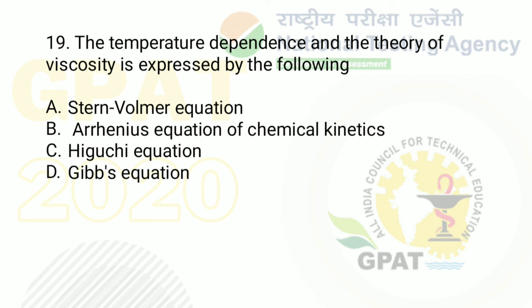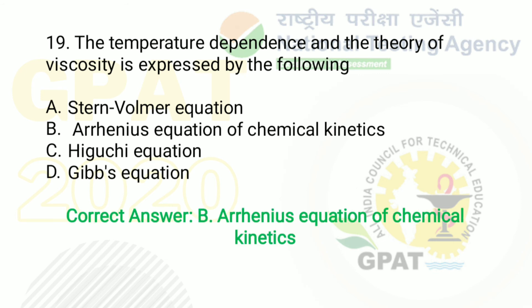Question number 19: the temperature-dependent theory of viscosity is expressed by the following. Option A: Stern-Volmer equation. Option B: Arrhenius equation of chemical kinetics. Option C: Higuchi equation. Option D: Gibbs equation. The right answer is option B — Arrhenius equation of chemical kinetics.